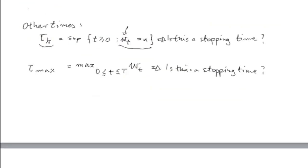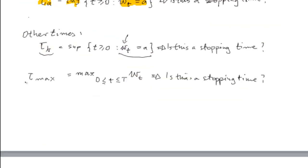Okay, and likewise, let's define another time, tau max. Max is just that we stop when we reach the maximum of our process in the interval from 0 to t. So is this a stopping time?